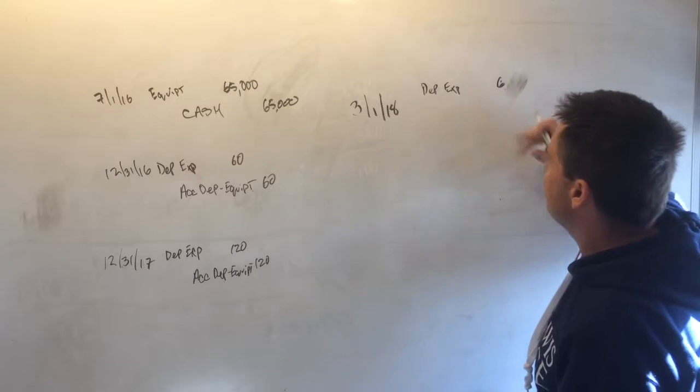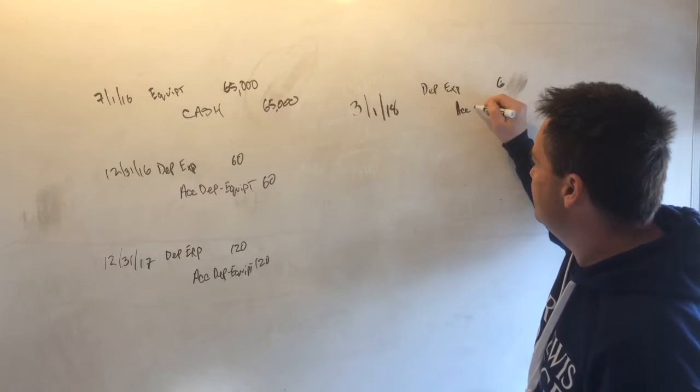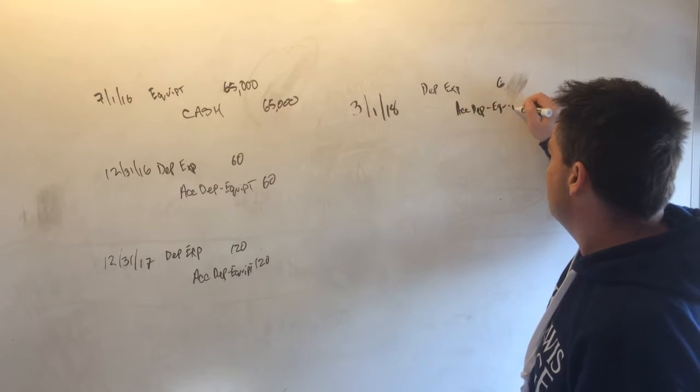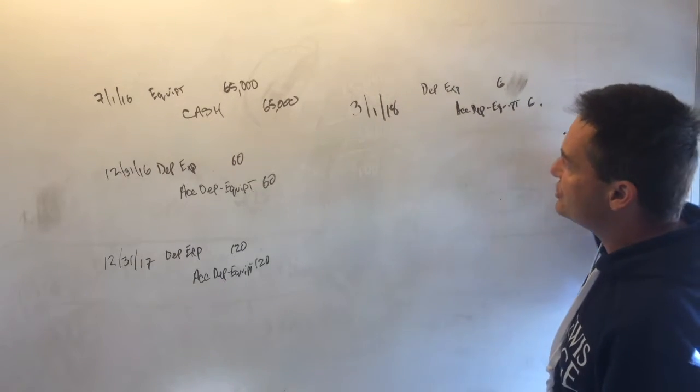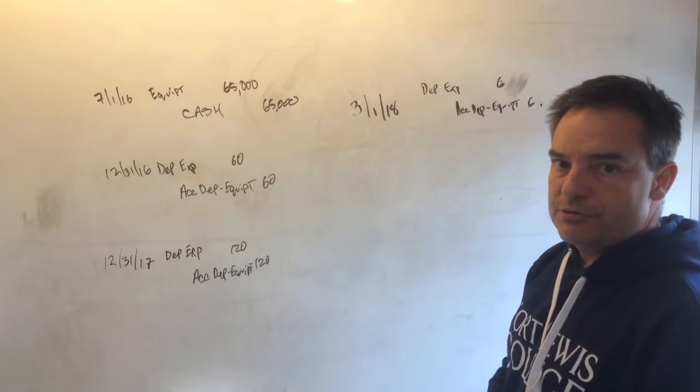You would debit depreciation expense for $6, and you would credit accumulated depreciation equipment for the $6. So that's journal entry number one, that gets you caught up on the depreciation expense.